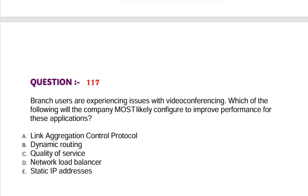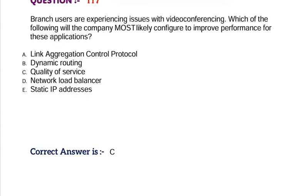Question: Branch users are experiencing issues with video conferencing. Which of the following will the company most likely configure to improve performance for these applications? Option A, Link Aggregation Control Protocol. Option B, Dynamic Routing. Option C, Quality of Service. Option D, Network Load Balancer. Option E, Static IP Addresses. Correct answer is Option C.